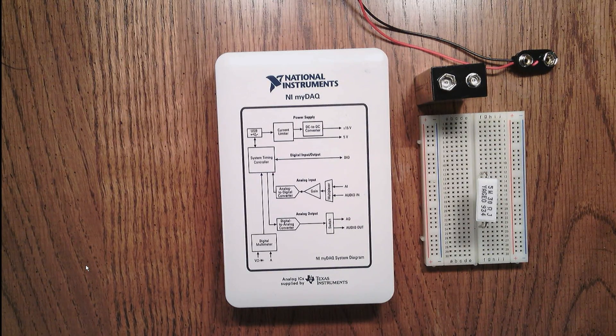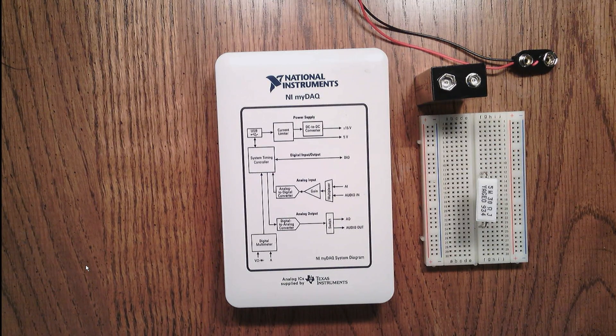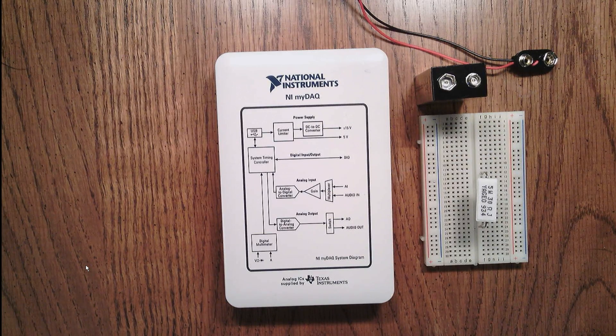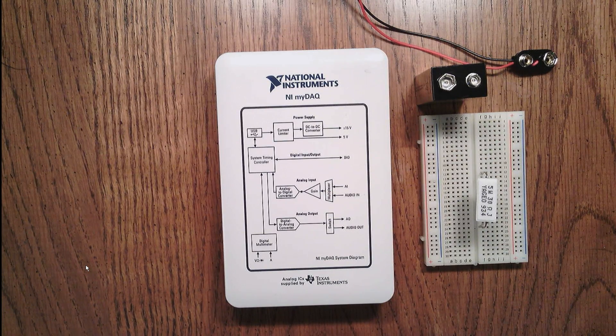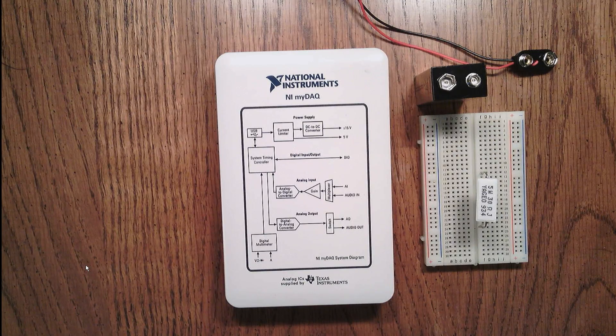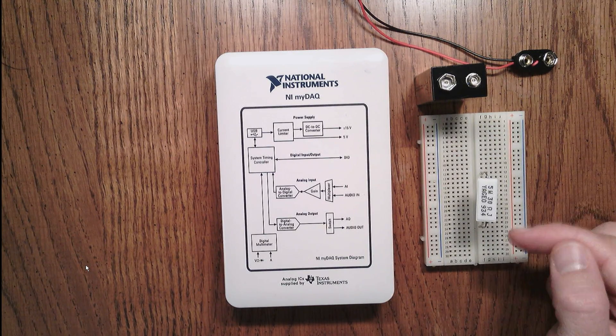In this video, I'm going to describe the process of setting up the MIDAC instrument so that we can measure the current and voltage from a 9-volt battery as it passes through a resistor.